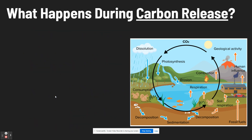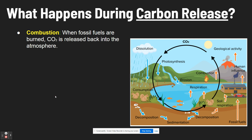How is it that carbon then gets released? One way is combustion — this is when fossil fuels are burned. This is a key role that humans play: when humans burn fossil fuels, carbon dioxide gets released back into the atmosphere.